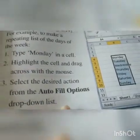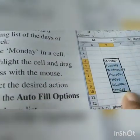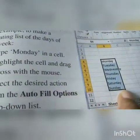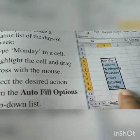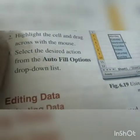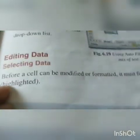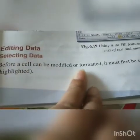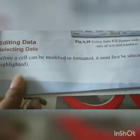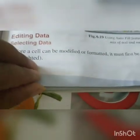For example, type Monday in one cell, go to the bottom right corner, and your cursor will change to a plus sign — drag it down and it will automatically fill the other days of the week. Now, editing and selecting data: before a cell can be modified or formatted, it must first be selected. When you select it, it will be highlighted.